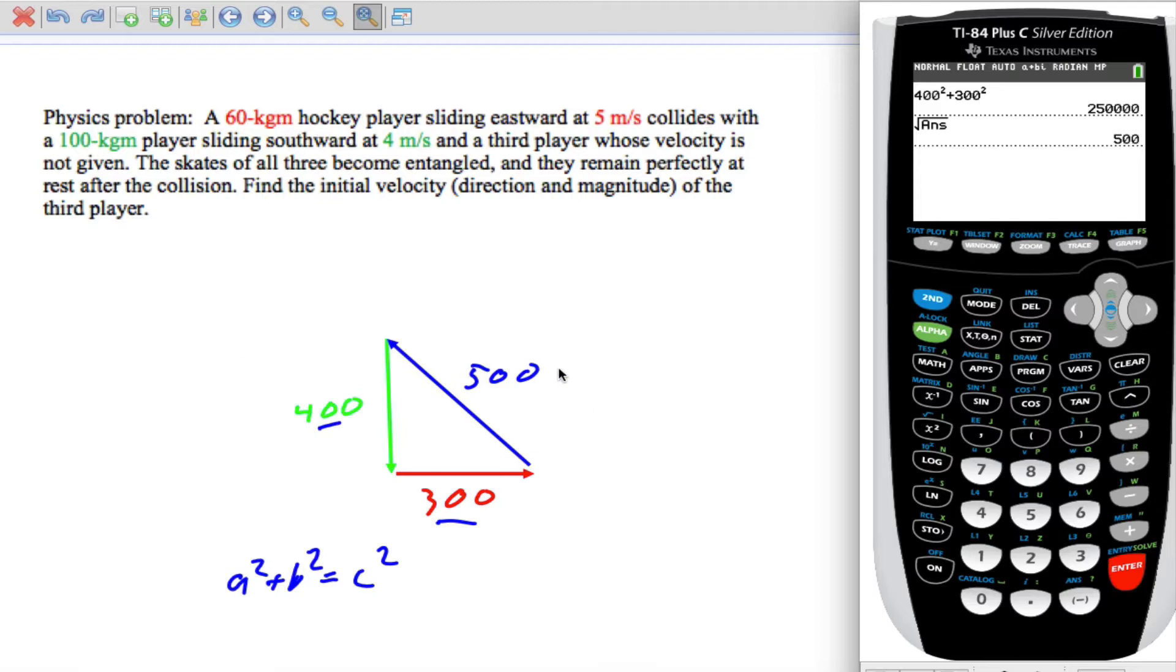So this is 500, and it is newton seconds because that is the impulse that has to be applied to stop these two. So if that impulse has to be applied, the impulse is being supplied by a player who is traveling in this direction.